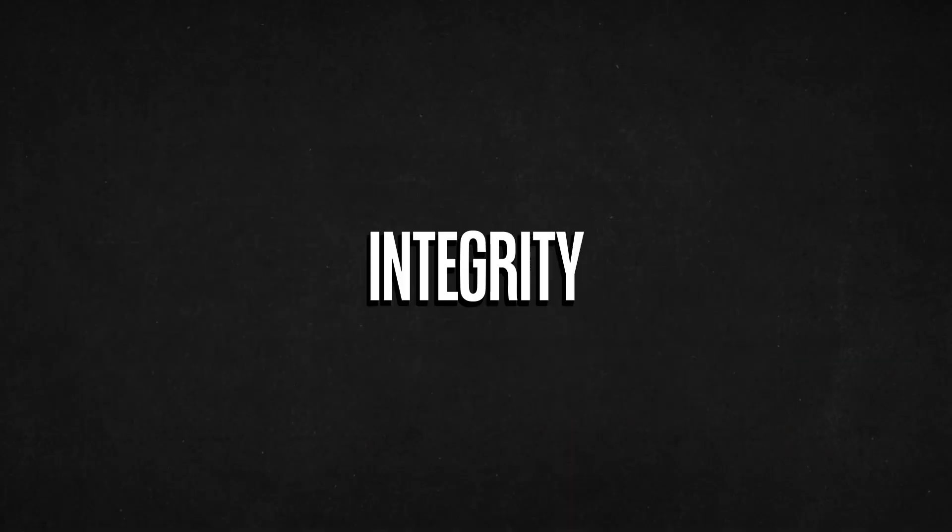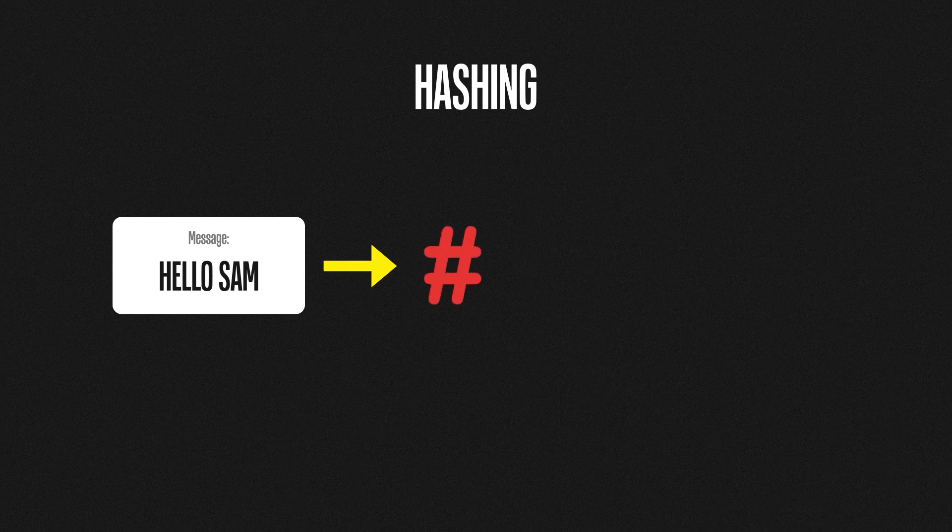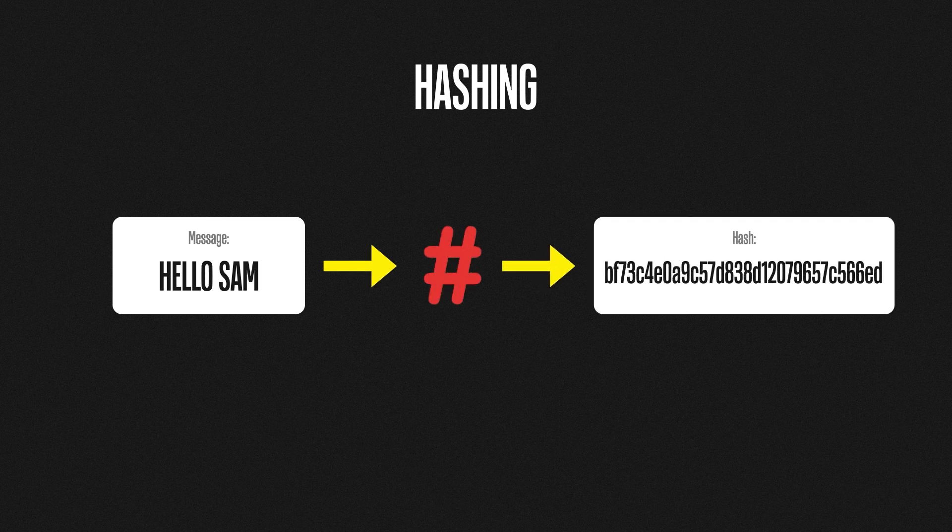Now that we know a bit about what non-repudiation is and why we need it, let's see how it works. To achieve non-repudiation we need two main things: we need to verify the authenticity and we need to verify the integrity. We're going to start with verifying the integrity first. The best way to do this is to use something called hashing. Hashing is a process of taking any string of characters and changing them into another fixed-length value. For example, if we take a simple message and run it through a hashing function, it will produce a fixed-length value called a hash.